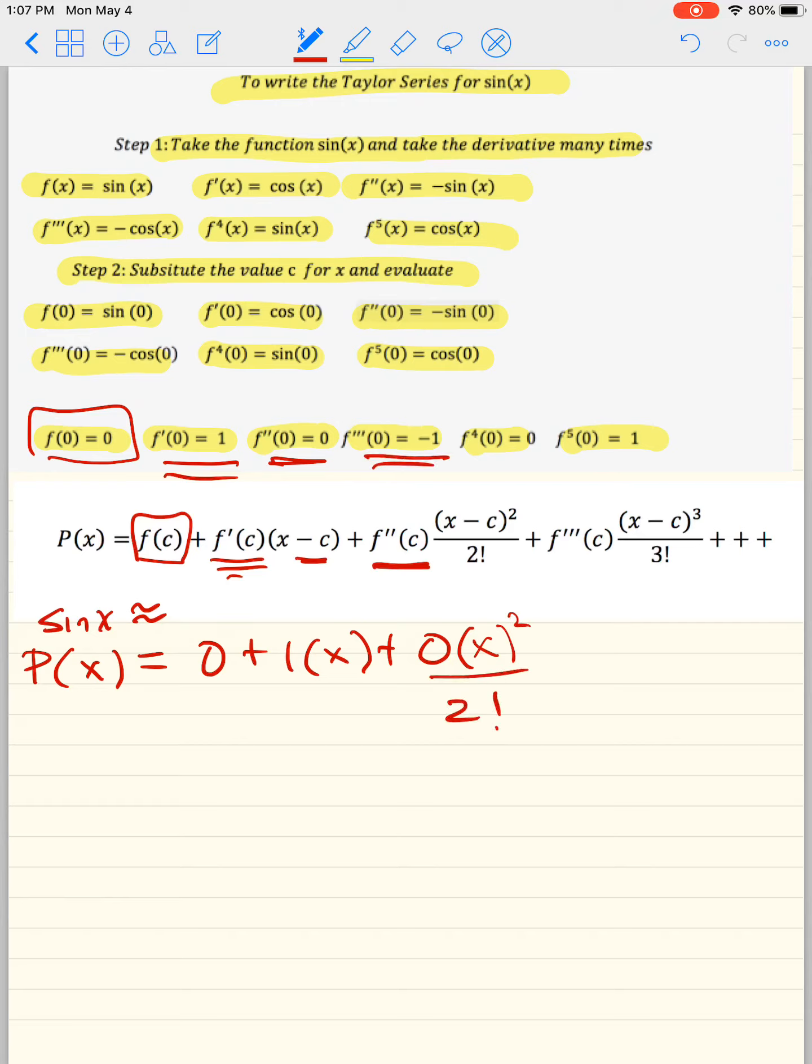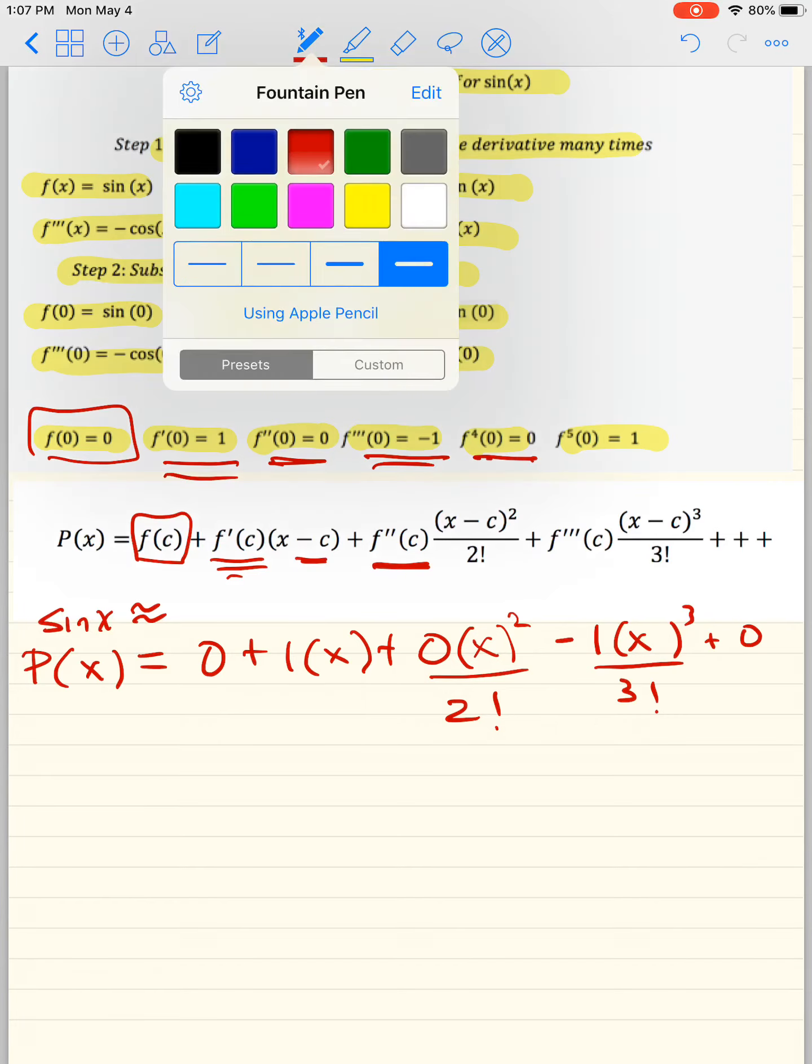Next one is negative 1, x to the third over 3 factorial, then 0. And then the last one will be plus, well, not the last one, but the last one in this example would be plus 1x to the fifth over 5 factorial.